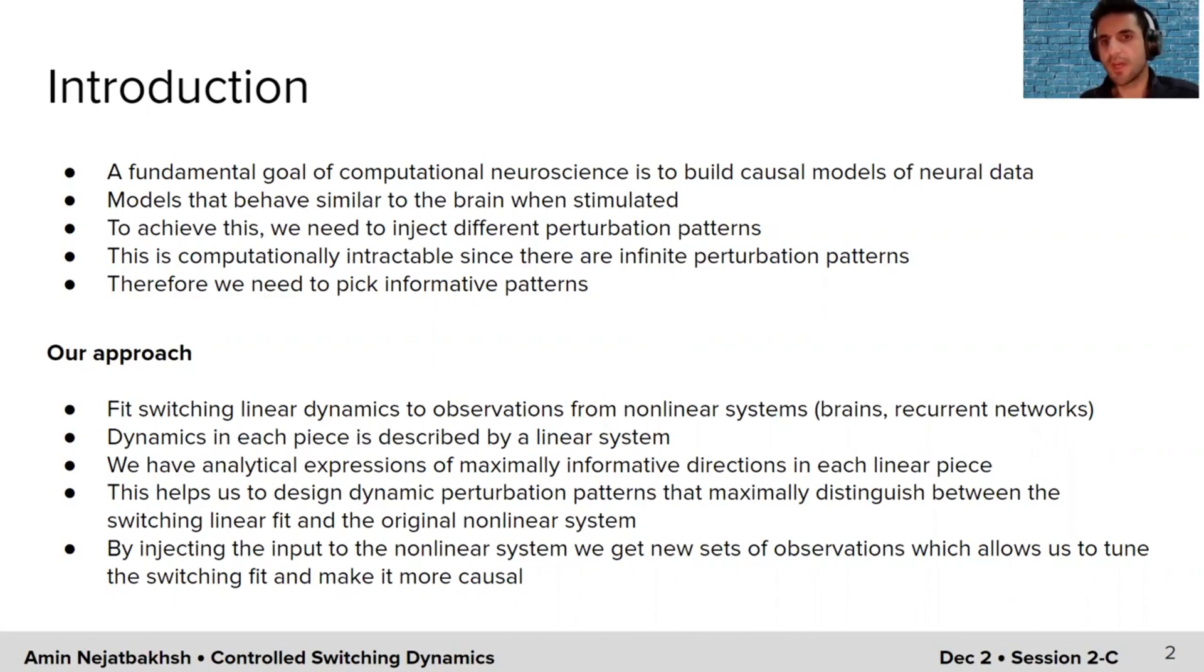This means that we can find points in the state space that if we control the state of the system towards those points, they're going to maximally distinguish between the switching linear fit and the original nonlinear system. We'll use this analytical expression and find the input stimulus or input perturbation pattern that controls the state of the system towards those maximally informative directions in the linear state. Once we inject this input to the nonlinear system, this gives us a new set of observations. By adding these new sets of observations to the previously recorded observations, we're going to be able to tune the switching fit to the system and make it more causal.